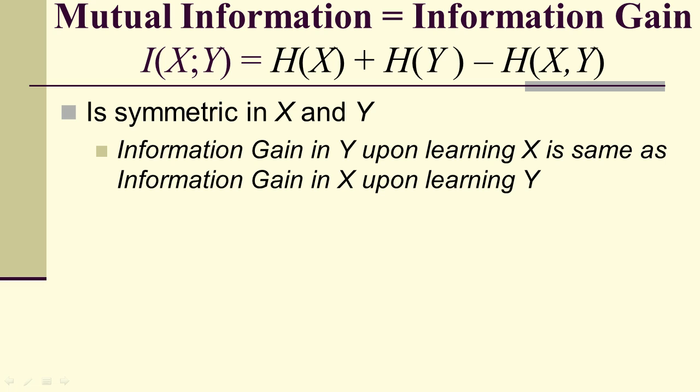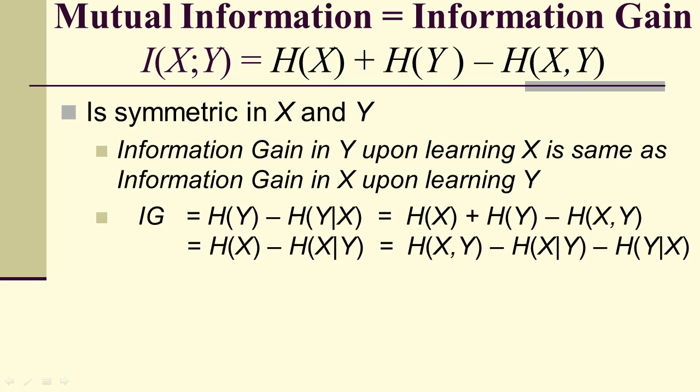The information gain in Y upon learning X is the same as the information gain in X upon learning Y. We have many different ways of writing this using our relationship between conditional and joint entropies. And remember, we're calling this now mutual information.